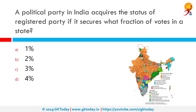A political party in India acquires the status of a registered party if it secures what fraction of votes in a state? The correct answer is one percent. A party has to fulfill a few conditions before it gets recognition as a state party. One part of it is that it has to secure at least one percent of the seats.